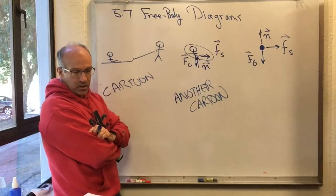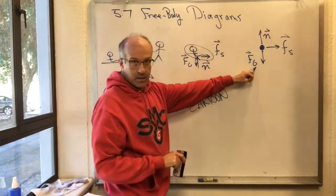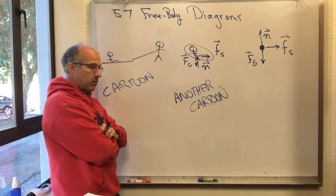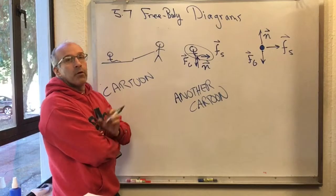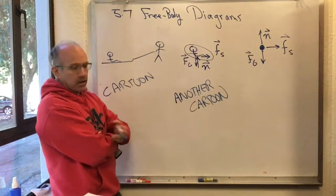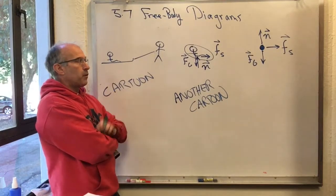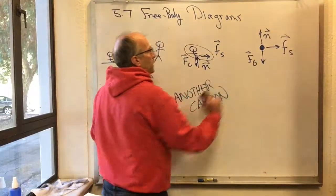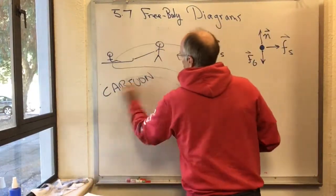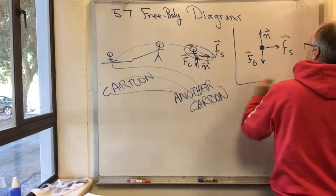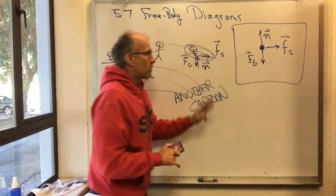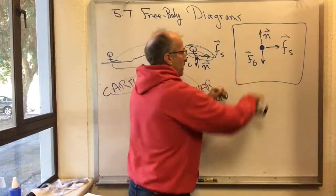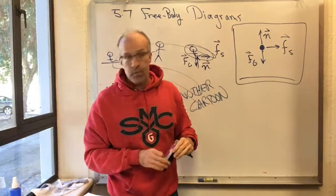Knight is extremely experienced at teaching physics. He's found that going straight to the free body diagram causes people to make mistakes — they confuse the agent for the object, or they invent forces like 'the force of turning' that aren't in the force catalog. So Knight has a well-defined force catalog and a well-defined cartoon process for isolating the object, resulting in a correct free body diagram. Now that you've reached 5.7, this process is the focus — you need accurate free body diagrams to do problems in chapter 6 and beyond.